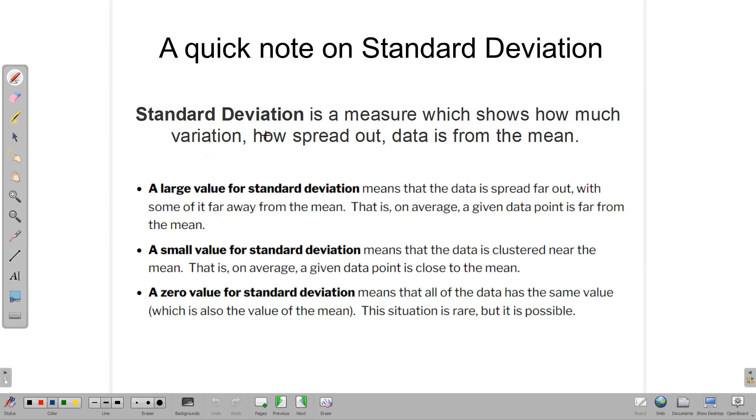Standard deviation though, by definition is a measure which shows how much variation there is in a data set. So if you have a set of data and you calculate the mean, the standard deviation tells you how those data within that set are spread out around the mean. So starting at the bottom here, a zero value for a standard deviation would mean that all the values in your data set are the same. So there's no variation. There's no spread.